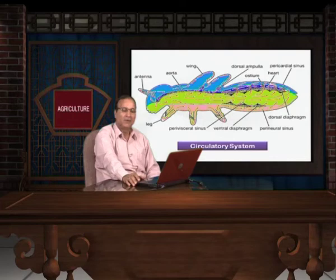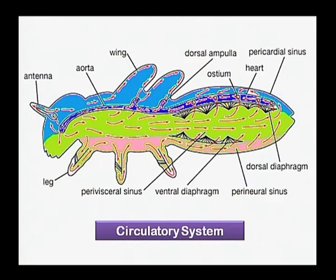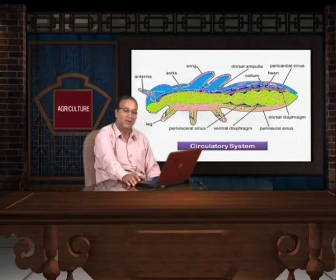What we have discussed about the circulatory system can be seen on screen in this diagram. The diagram shows all three sinuses and two diaphragms, as well as the dorsal vessel. The blue portion is the pericardial sinus, the green portion is the perivisceral sinus, and the pink part is the perineural sinus, clearly depicting the different parts of the circulatory system.